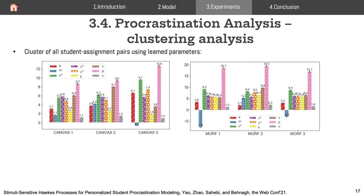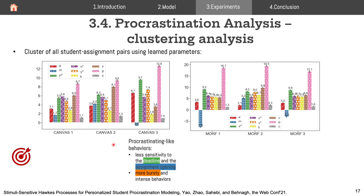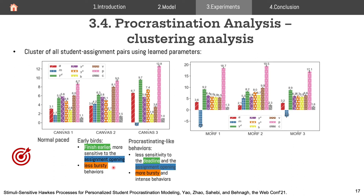In our procrastination analysis, we cluster all student-assignment pairs based on their learned parameters used in the intensity function, identifying three clusters in Canvas. The first cluster shows procrastination-like behaviors: less sensitive to deadline and assignment opening, with more bursty and intense behaviors. The second cluster contains early birds who finish assignments earlier, are more sensitive to assignment opening, and show less bursty but more regular behaviors. A third group falls somewhere between the two.